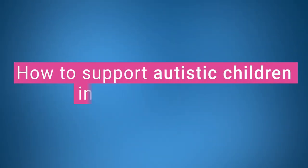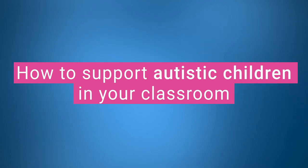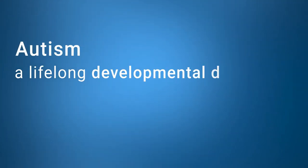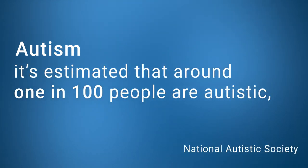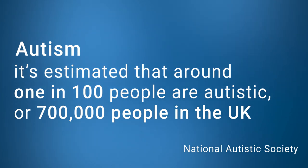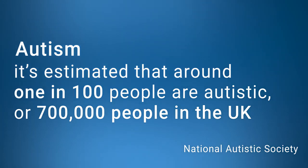Hi, I'm Laura from Twinkle and I'm here to share my top tips for supporting autistic children in your classroom. Autism, or autistic spectrum disorder, is a lifelong developmental disability which affects how people communicate and interact with the world. More than one in every 100 people are autistic, which equates to 700,000 adults and children in the UK. So here are my five top tips for supporting autistic children in the classroom.